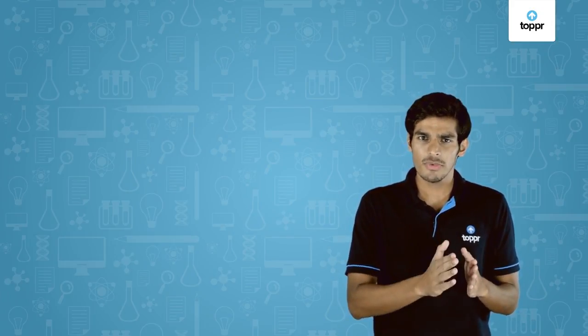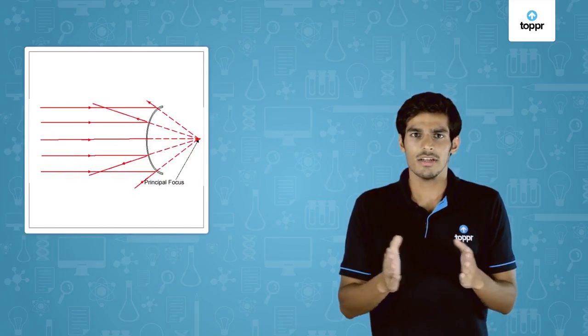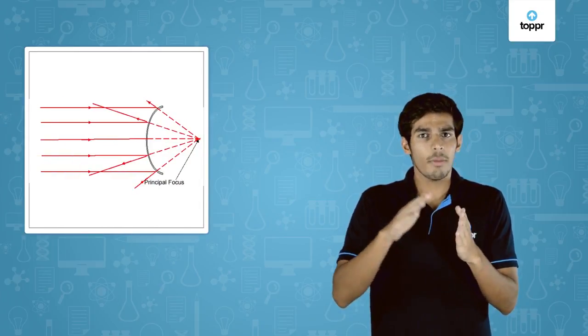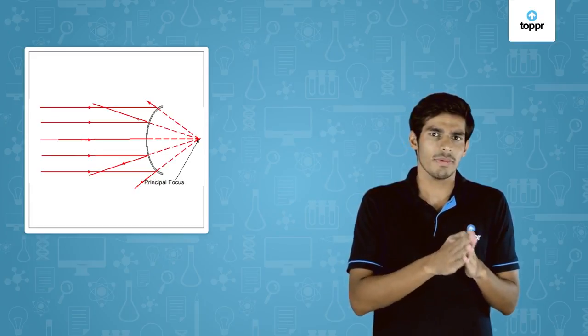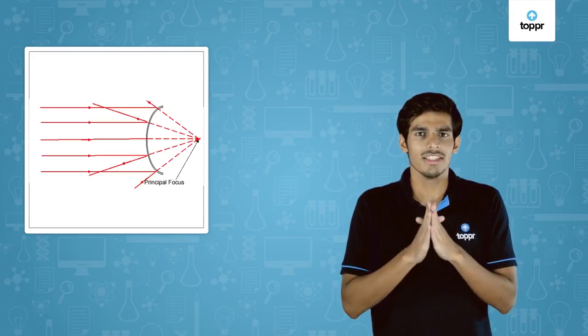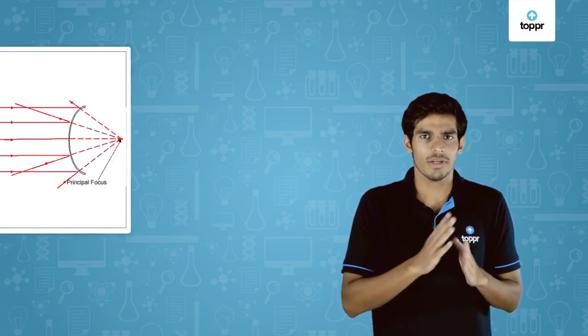In place of a concave mirror, if we take a convex mirror, the reflected rays appear to come from a point on the principal axis and this point is the principal focus of a convex mirror.